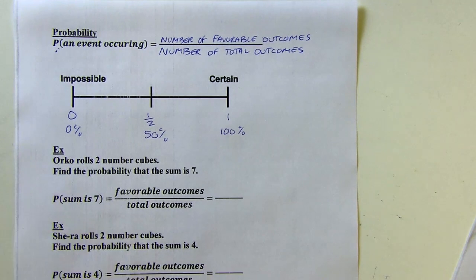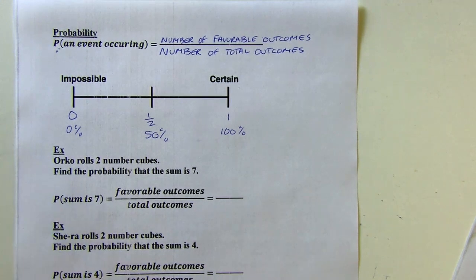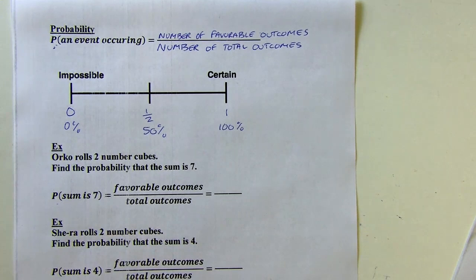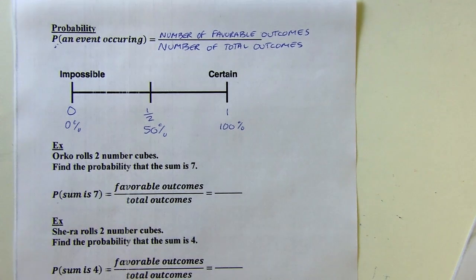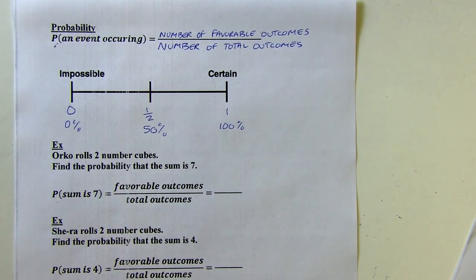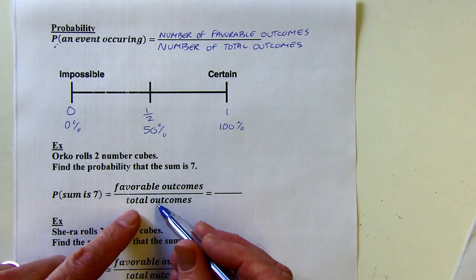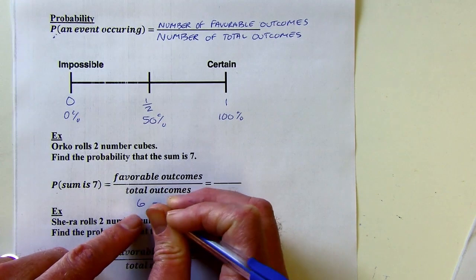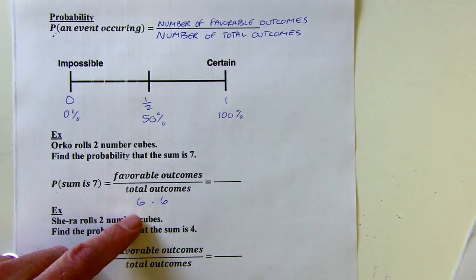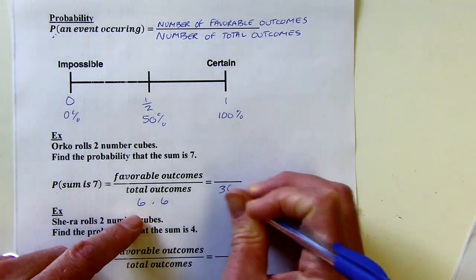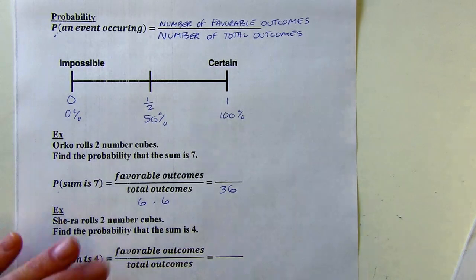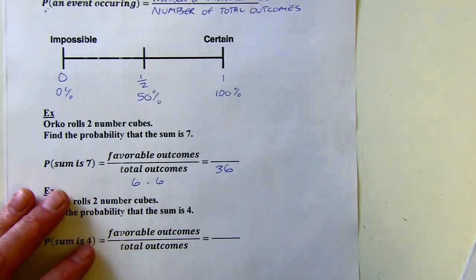Orko is going to roll two number cubes, and we'll find the probability that the sum is 7. Using favorable outcomes over total outcomes: the total outcomes, since we're rolling two number cubes, is 36. For the favorable outcomes, let's think — if we want a sum of 7, you could roll a 1 and a 6, a 2 and a 5, or a 3 and a 4.